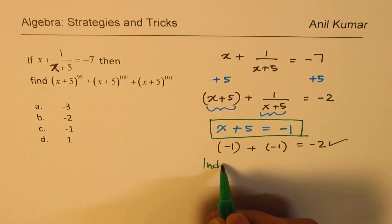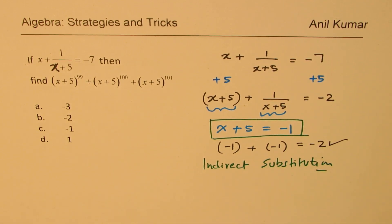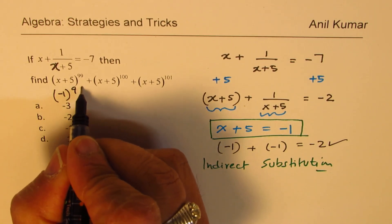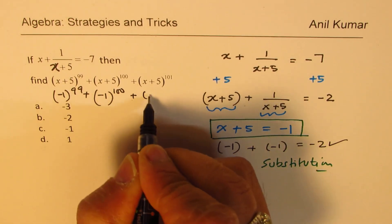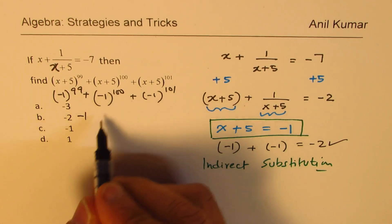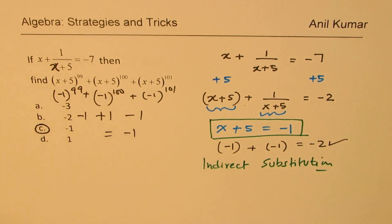This is indirect substitution — a great technique when you cannot directly substitute. If x+5 = −1, then (x+5)^99 = (−1)^99 = −1, (x+5)^100 = (−1)^100 = +1, and (x+5)^101 = (−1)^101 = −1. All odd powers give −1 and even powers give +1. The final result is −1, so option C is the correct answer. For questions where direct substitution doesn't work, rearranging and substituting a block as a value can help.